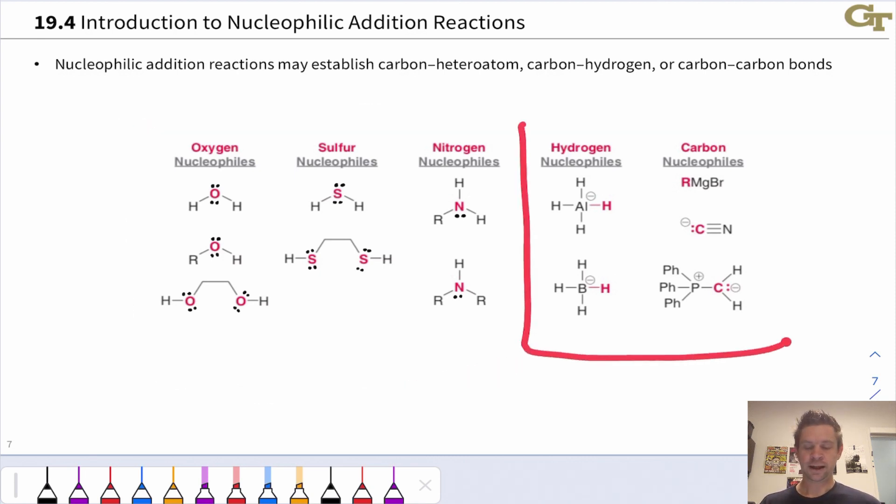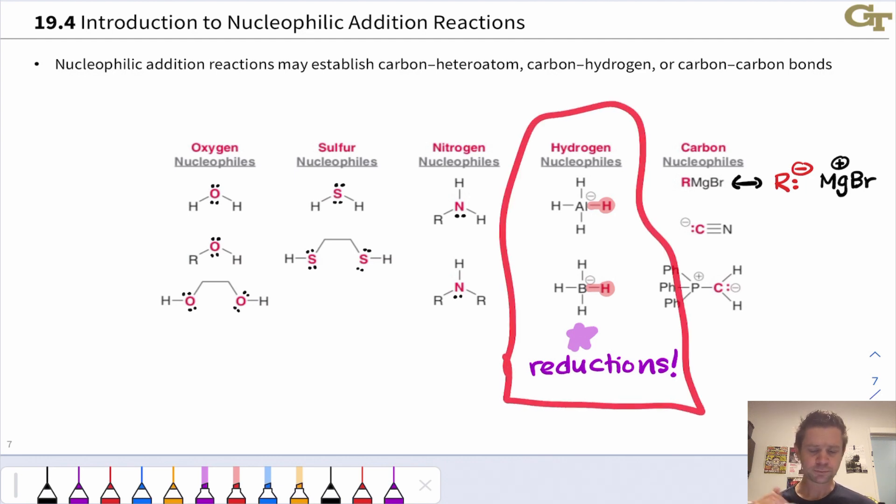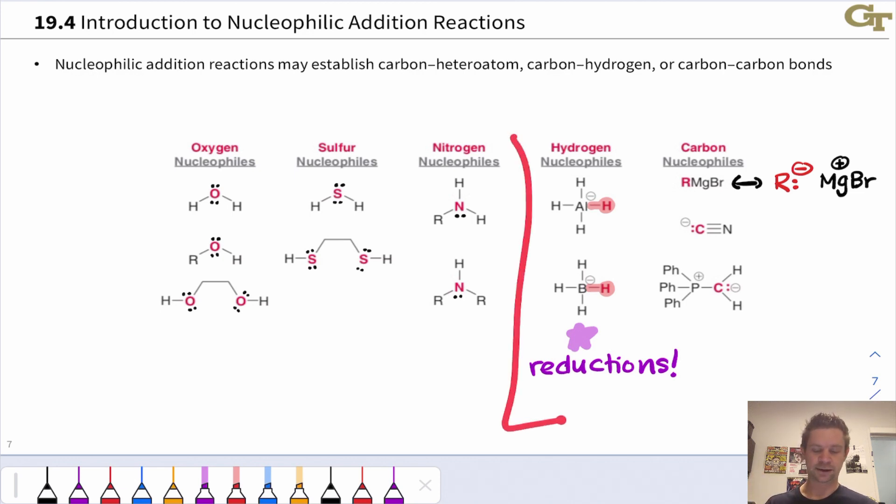We will also look at hydrogen and carbon nucleophiles. One thing to note about hydrogen nucleophiles is that these are the complex metal hydride reagents that we've seen previously in the course. The reduction reactions of ketones and aldehydes that we've previously seen are nucleophilic addition reactions, and we're going to return to those to draw a connection between these reactions, which were absolutely irreversible and heavily favored, and reactions of carbon nucleophiles.